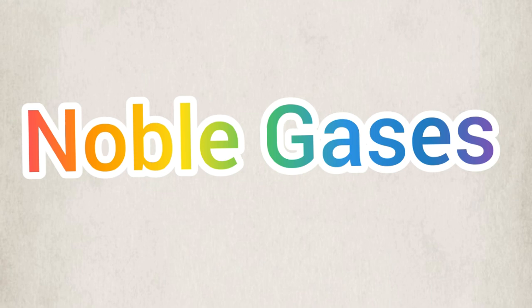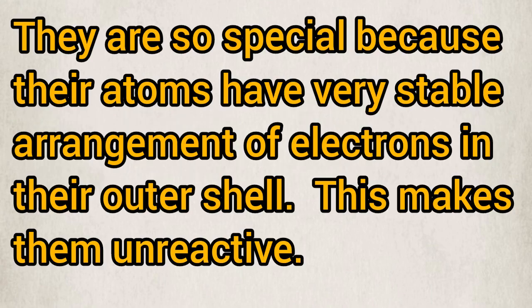They are so special. They are called noble gases. They are special because their atoms have a very stable arrangement of electrons in their outer shell. All of them have their outer shell completed—helium, argon, xenon—all of them have their outer shell completed. This makes them unreactive; they don't react.